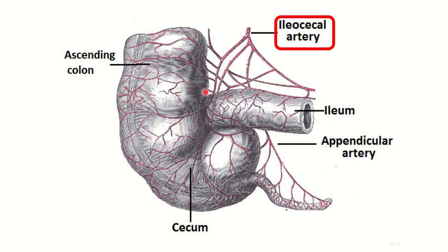In this picture, the cecum is supplied by the ileo-colic artery. From the ileo-colic artery there are branches — the ileo-cecal branches — and from these branches further vessels arise to supply the cecum, as well as the appendicular artery which supplies the appendix.